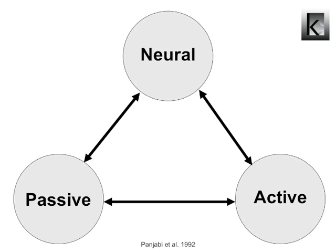Of course, there is always the presence of intra-MCL proprioceptive sensors which signal the brain about incoming movement, loads, and disturbances. As a reaction, the muscle system around the knee will be activated to provide the active stability which is needed.